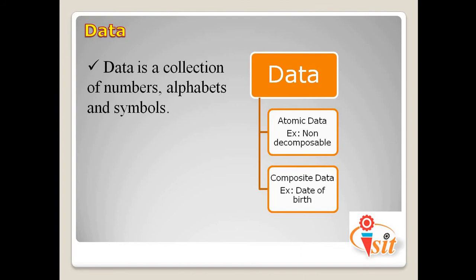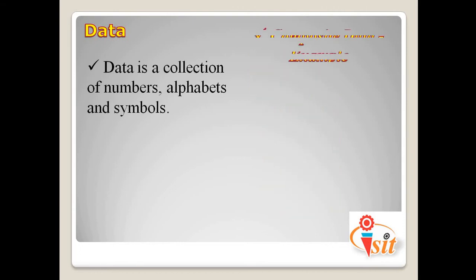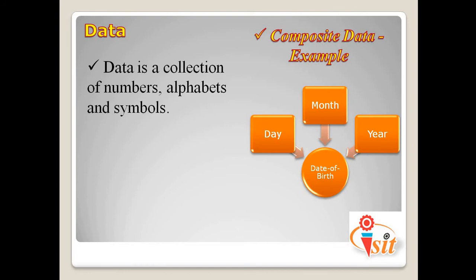Composite data is the composition of several atomic data items and can be further divided into atomic data. For example, consider date of birth — it can be separated into three atomic values: the first gives the day of the month, the second gives the month, and the last gives the year. So day, month, and year are each atomic data, while date of birth as a whole is composite data.